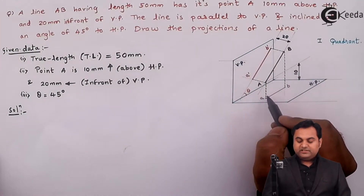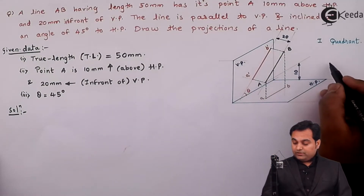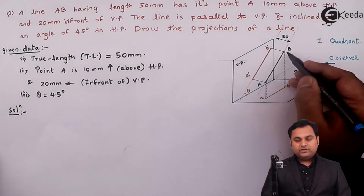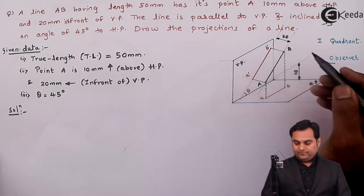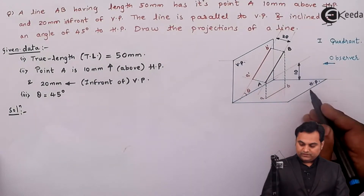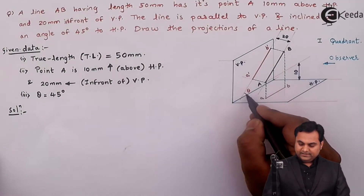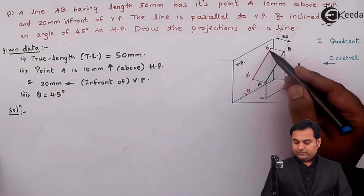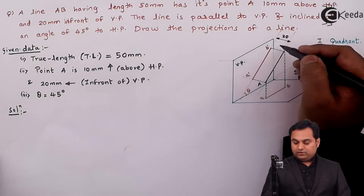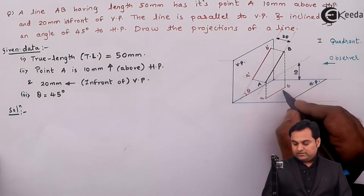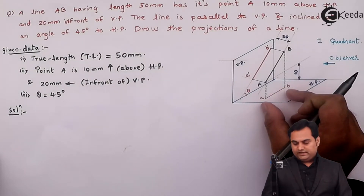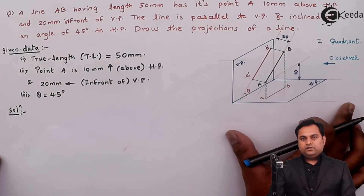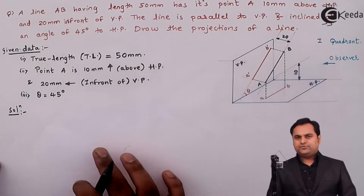The 10 mm above HP will be visible in the front view (VP), and 20 mm in front of VP will be visible in the top view (HP). When looking as an observer from the front, it gives the front view — line A dash B dash — having true length 50 mm, inclined to HP at angle theta equal to 45 degrees. When looking from top, the same line AB appears as a horizontal line in the top view, which becomes the apparent length. So I have to draw the front view in VP and the top view in HP.